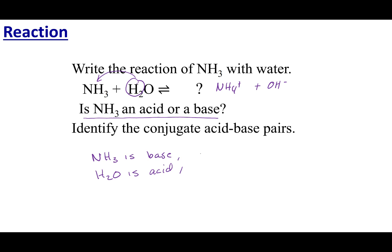If NH3 is my base, then my conjugate acid is one more proton added to it, which is NH4+. So I noted that H2O is my acid, so my conjugate base is if I remove one proton off of my H2O, which is going to be OH-, and you see both of these species on the product side of this reaction.